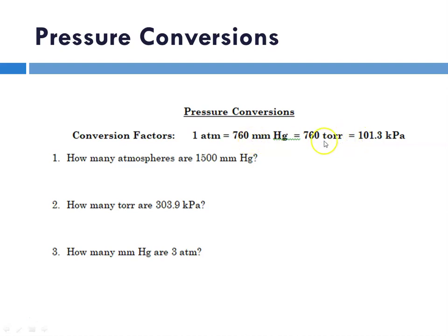Remember, a millimeter and a torr are the same, which is equal to 101.3 kilopascals. I'm going to work through with you how to do number one on this page. Then the assignment should be posted for you to complete this page.